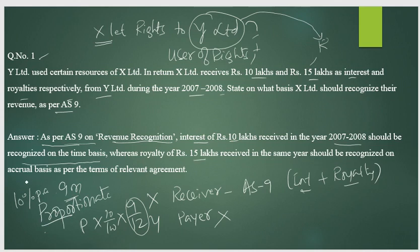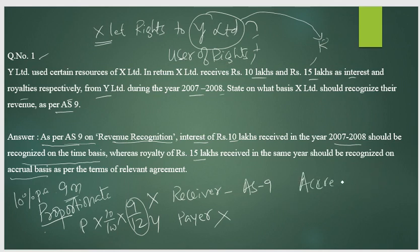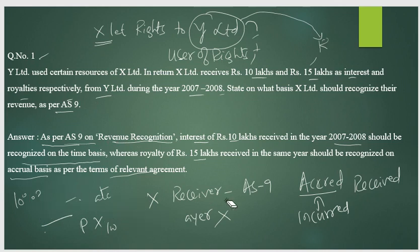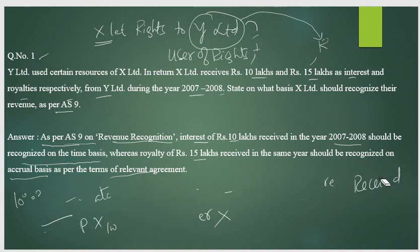Royalty of 15 lakh rupees received in the same year should be recognized on the basis of accrual. Accrual means when the revenue is actually earned. You collect it on an actual or accrual basis as per the terms of the relevant agreement. So royalty is recognized on an accrual basis.